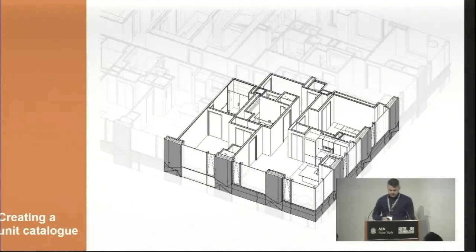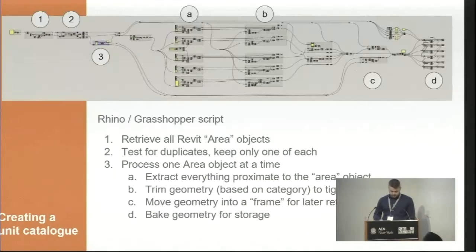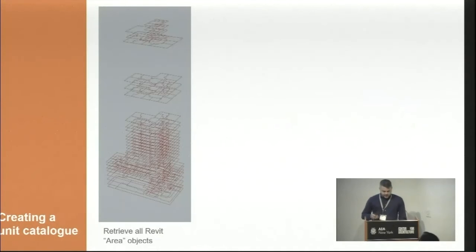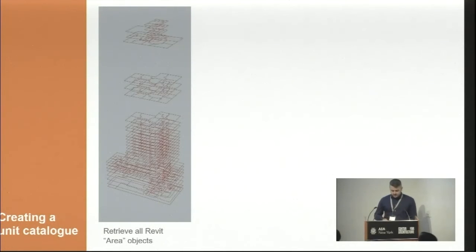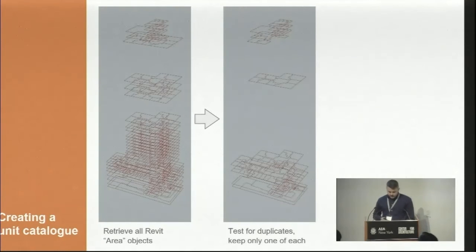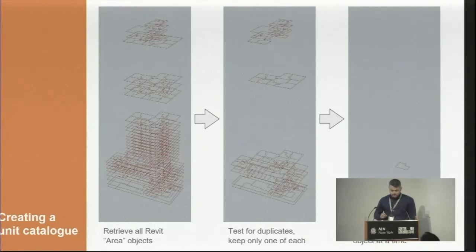As you can see here, the unit within this project is tightly nested with its neighbors, so extracting it isn't as simple as just cutting out a chunk of the model. This is the script we developed to handle extraction of the units — it basically has seven steps and we'll walk through each one. We have an area scheme in the model which corresponds with the unit areas. The first step is to retrieve all of the Revit area objects within that area scheme, then compare them and eliminate any duplicates — we might have many due to the way floor plans repeat as you go up the building. Once we've narrowed down to just one of each unique unit type, we cycle through them processing one at a time.